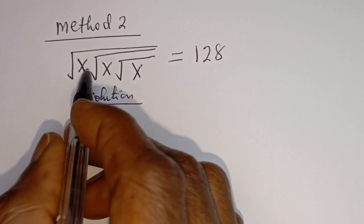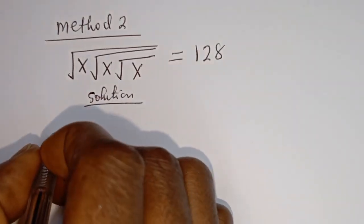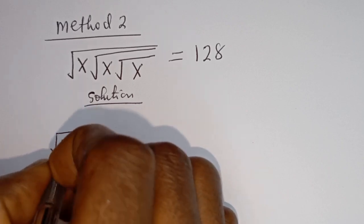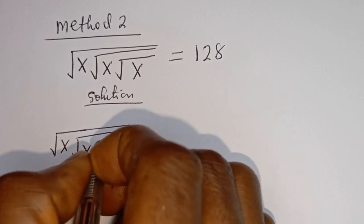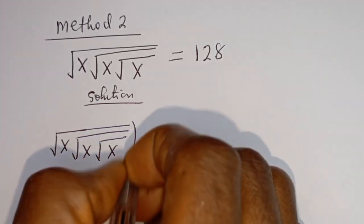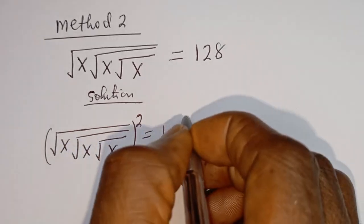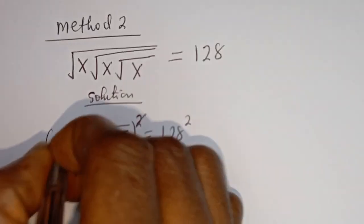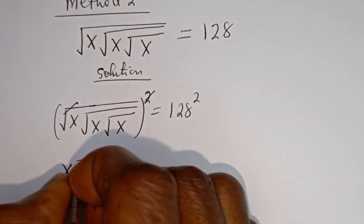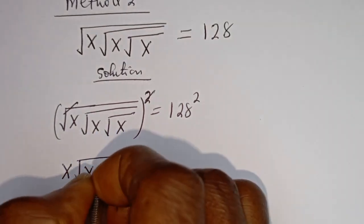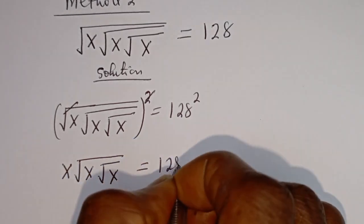Let's take the square of both sides: square root of s times square root of s times square root of s, all squared, is equal to 128 squared. This cancels the outer square root, giving us s times square root of s times square root of s is equal to 128 squared.